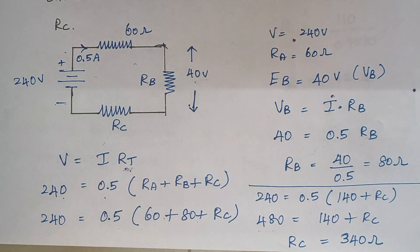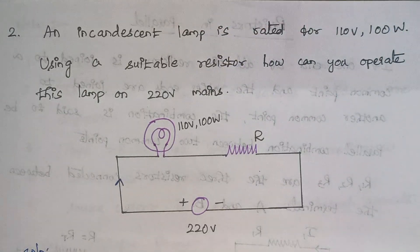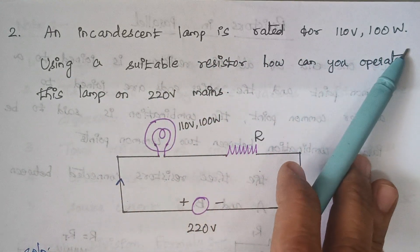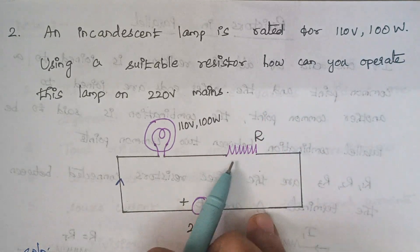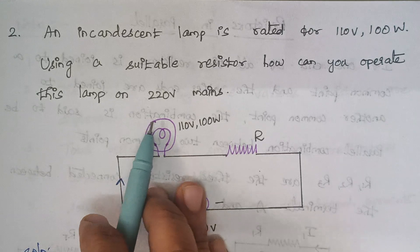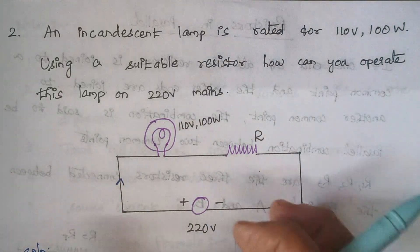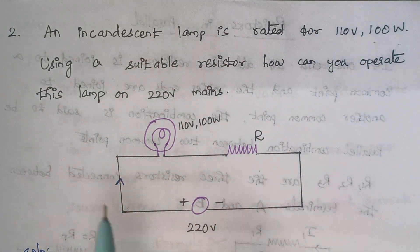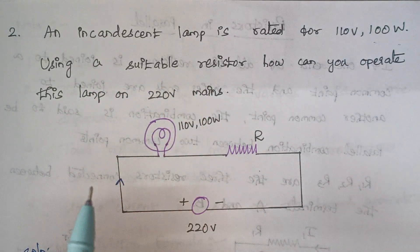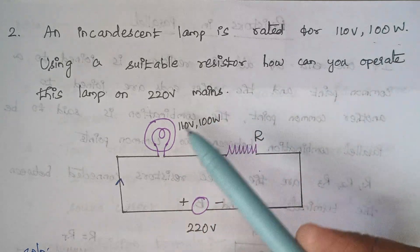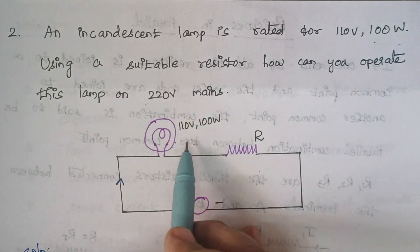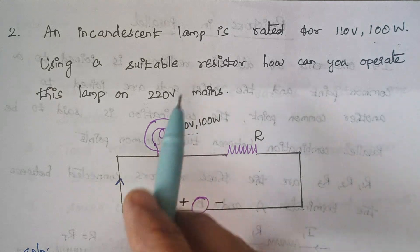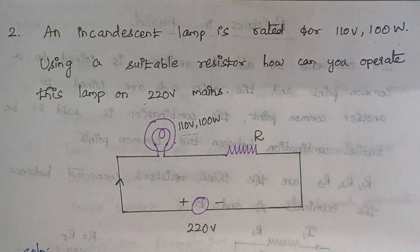The first problem is complete. The second problem: an incandescent lamp is rated for 110 volts and 100 watts. Using a suitable resistor, how can you operate this lamp on a 220 volt main? The lamp rating is 110 volts, 100 watts, but we need to insert a resistor to safely operate it at 220 volts. We need to find the value of that resistance.